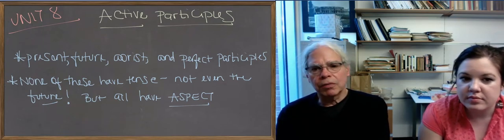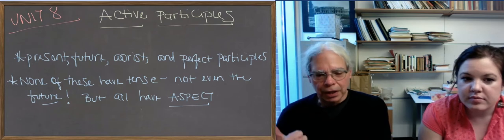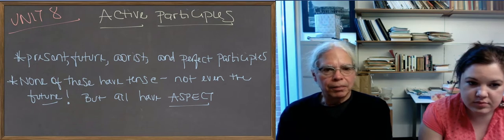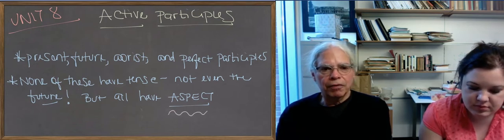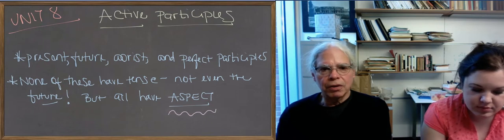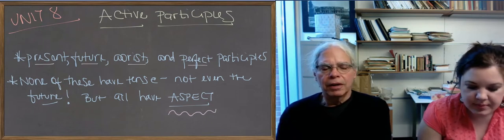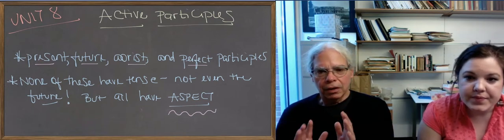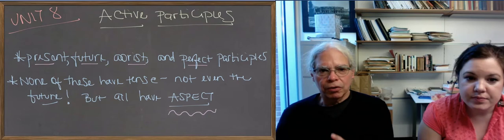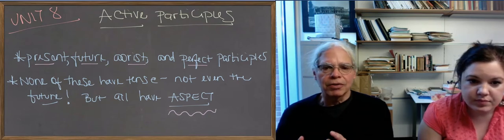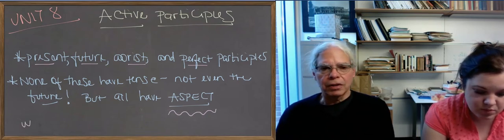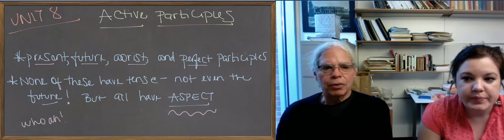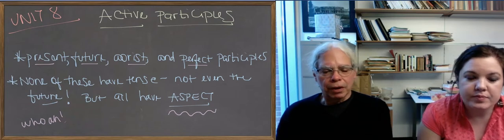So the first thing to realize is that in addition to voice - that is active, middle, and passive - participles have aspect. We're going to learn how to form present, future, aorist, and perfect participles, all of them active in this first chunk. And the key concept is that even the future, so-called future participle, doesn't have tense. It's got a modal significance. It's a remnant and an aspectual form.